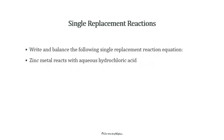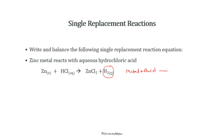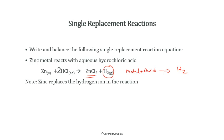Another example is zinc metal reacting with aqueous hydrochloric acid. Zinc and acid — in general, metal plus acid is a single displacement reaction where the metal replaces hydrogen. So you always get hydrogen gas as a product. Zinc replaces the hydrogen ion in the reaction, and the equation balances accordingly.